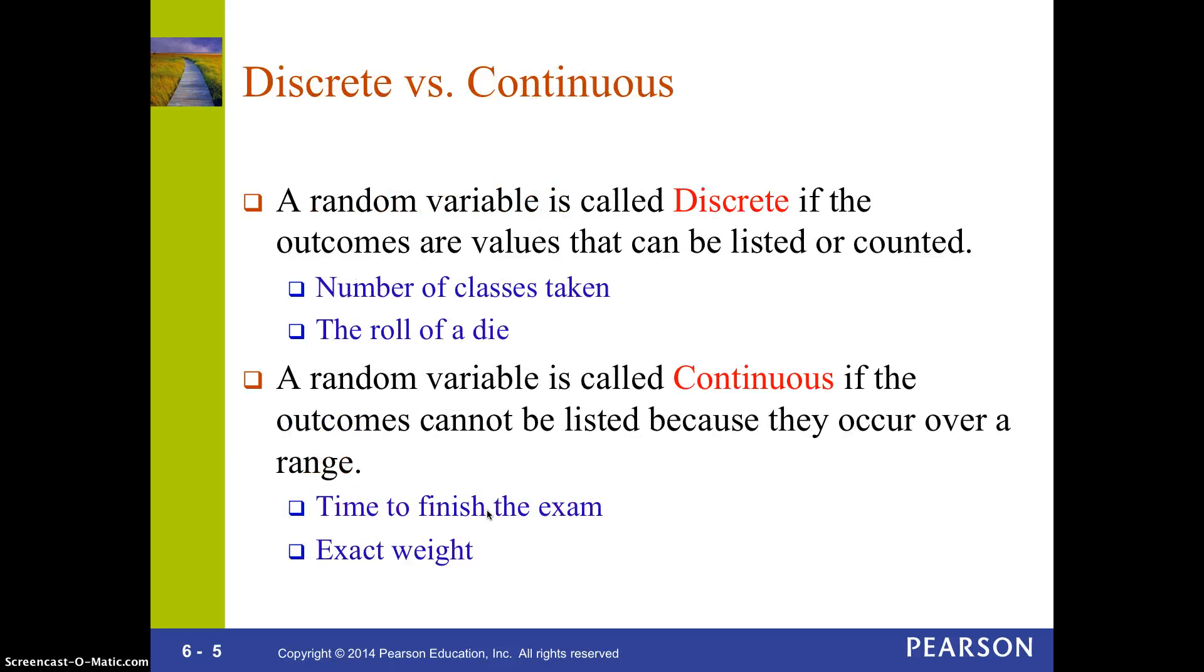First, let's talk about what's the difference between a discrete variable and a continuous variable. A discrete variable has values that you can actually list or count. That's if I ask you how many classes you've taken, you're going to say one, two, three, the roll on a die. Those are examples of discrete, of a discrete variable.